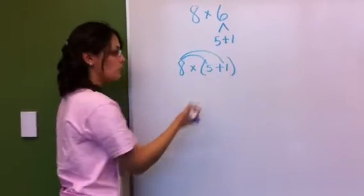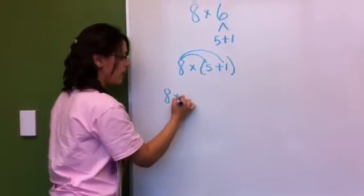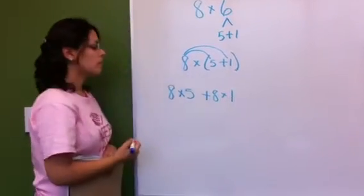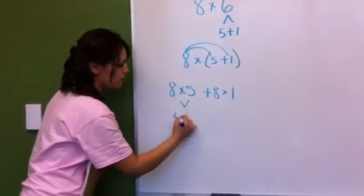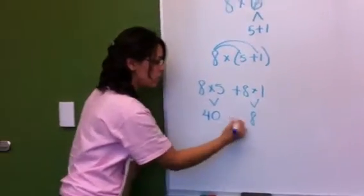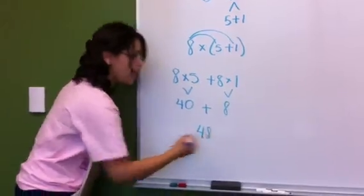Leaving you with 8 times 5 plus 8 times 1. 8 times 5 gives you 40. 8 times 1 gives you 8. You add those together and you get 48.